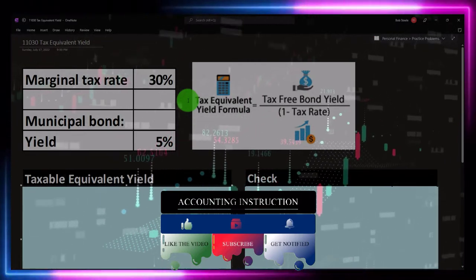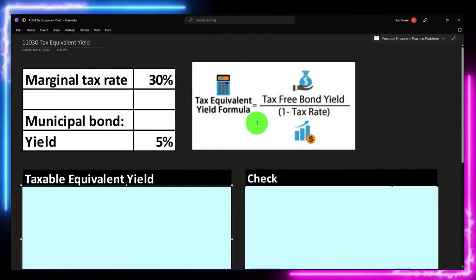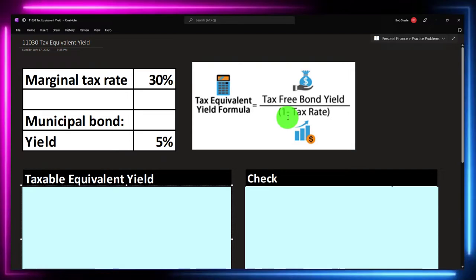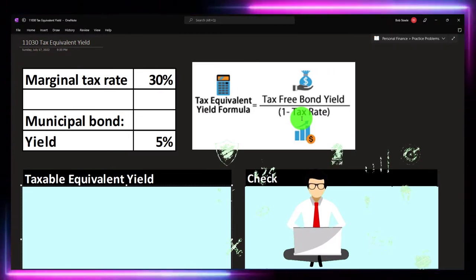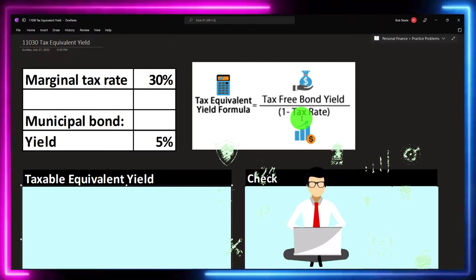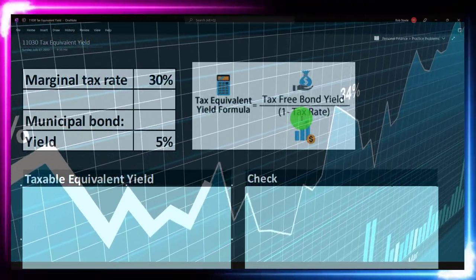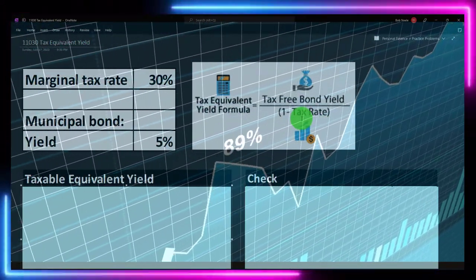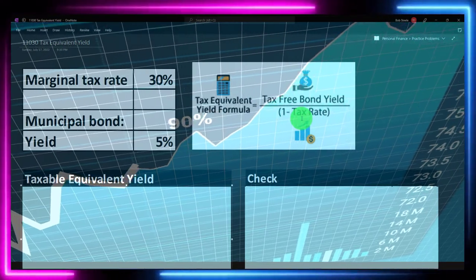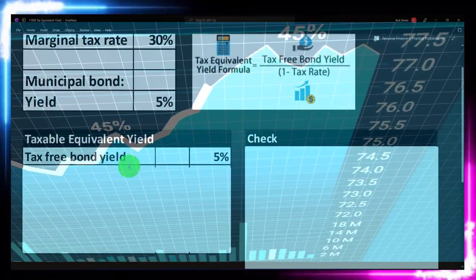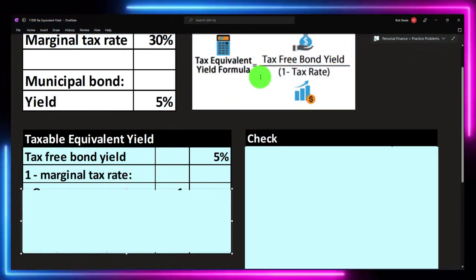The calculation for that is the tax equivalent yield formula. That's the tax-free bond yield — which is the 5% — divided by one minus the tax rate. We're using 30% here, noting that this tax rate is the marginal tax rate, the highest tax rate. I'm breaking this formula out into a table, which is really good practice and helps you set up worksheets useful for multiple purposes — you can also set this up in Excel so you can see transparently what is happening in the formula.